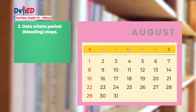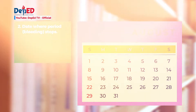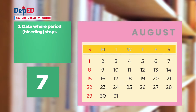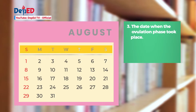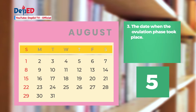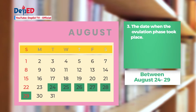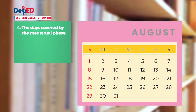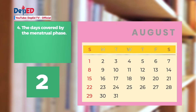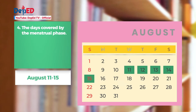Number 2: The date where the period, or bleeding, stops. The correct answer is August 15. Number 3: The date when the ovulation phase took place. The correct answer is between August 24 to 29. Number 4: The dates covered by the menstrual phase. The correct answer is August 11 to 15.